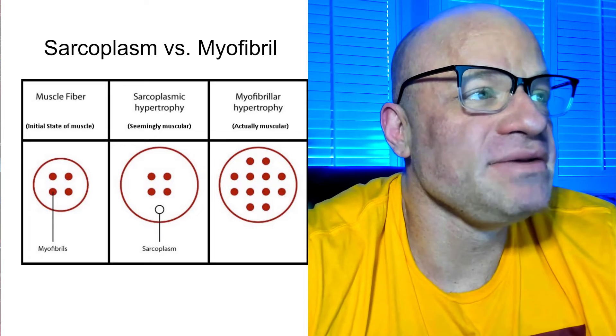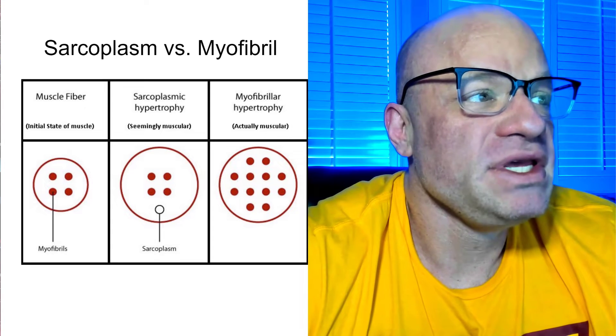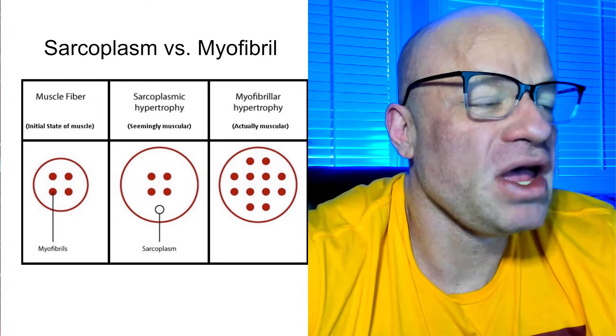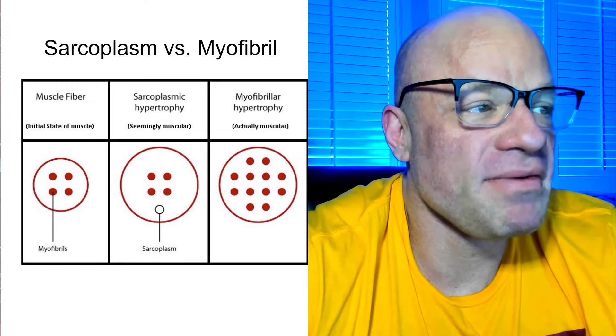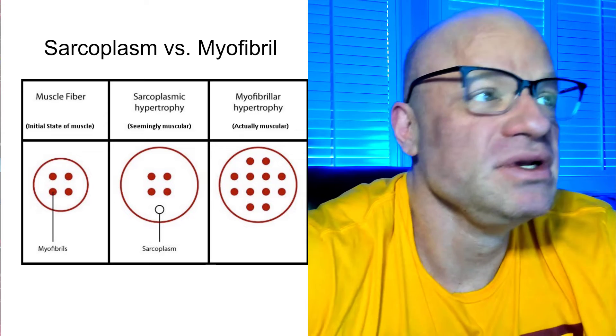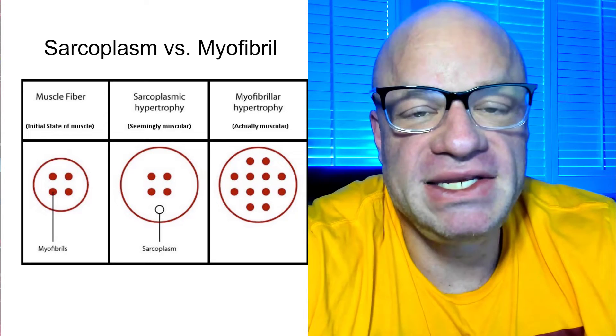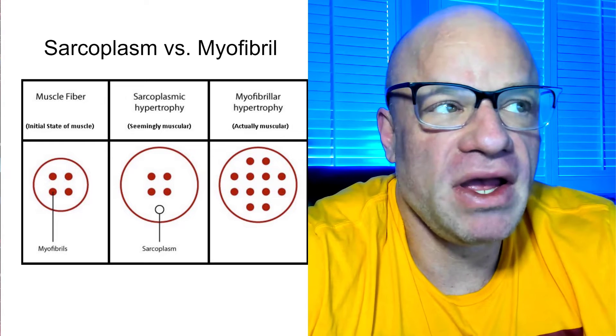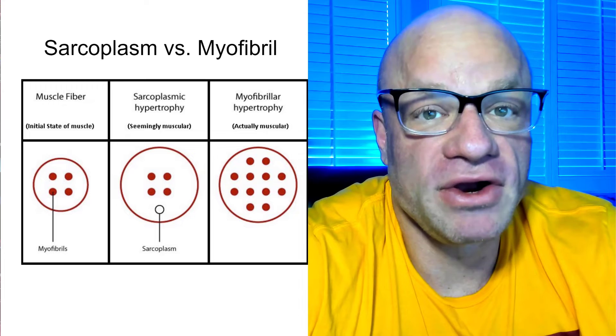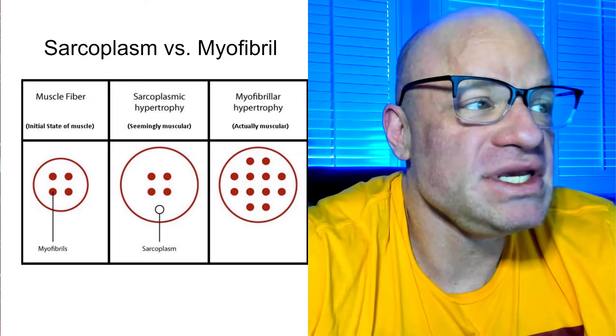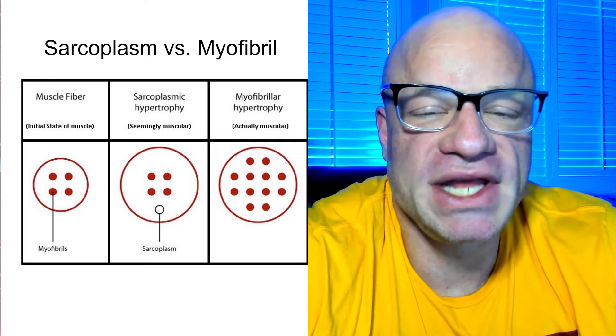So the sarcoplasm versus the myofibril. The muscle fiber, you'll see here, on the left, you can see myofibrils. This is a muscle fiber, and this is just a basic example. So if you want to see an example of myofibril growth versus sarcoplasmic growth, you can see here, let's just say the picture on the left is the initial state of the muscle.